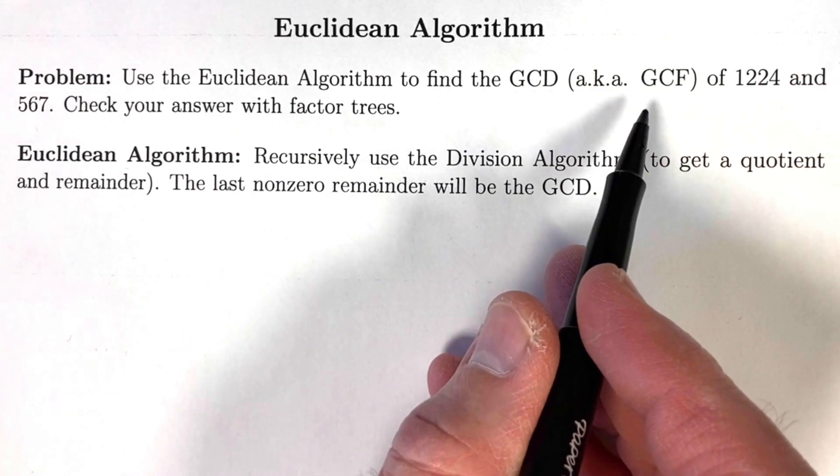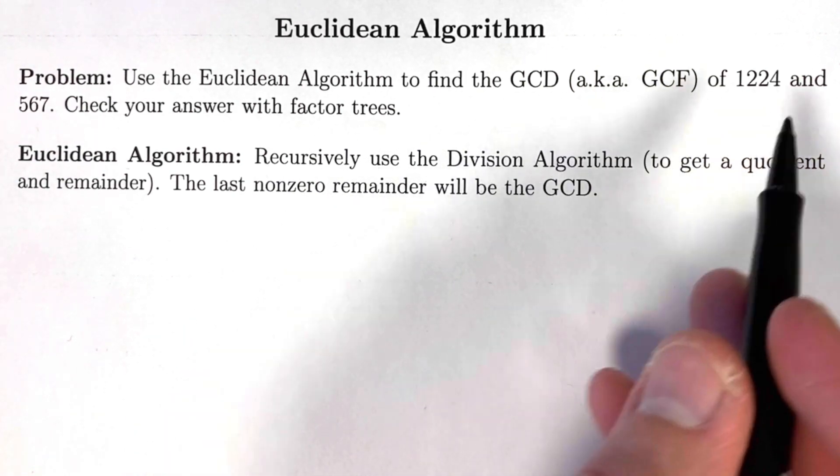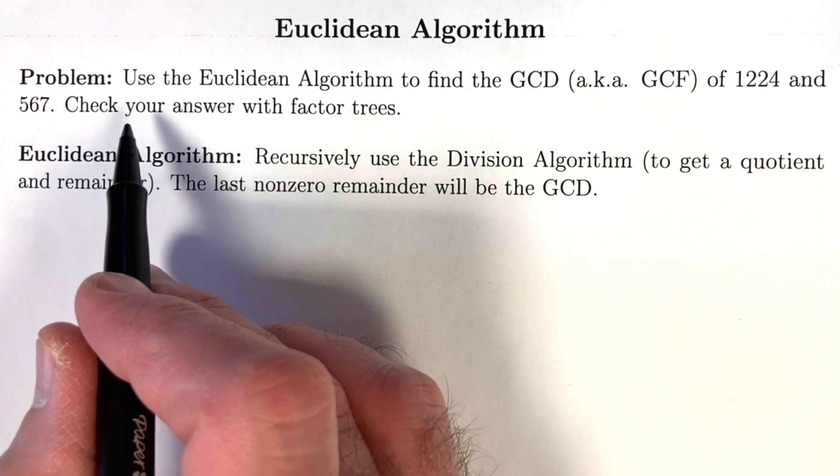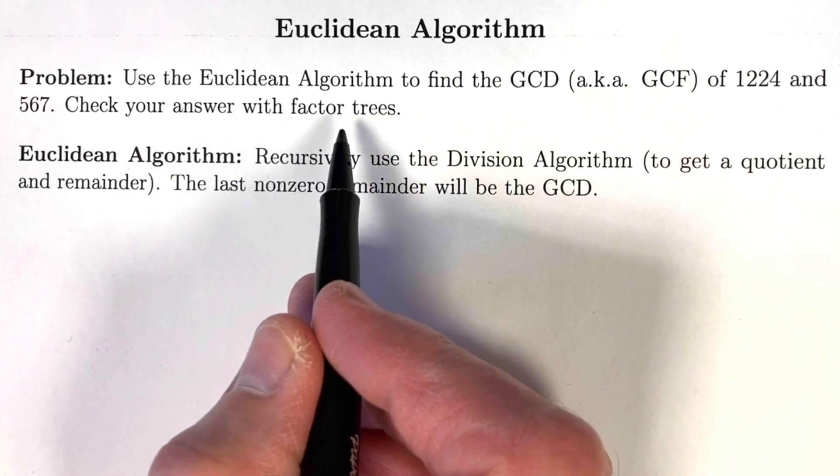Also known as GCF for greatest common factor, of the two whole numbers 1224 and 567, and then we'll check our answer with factor trees.